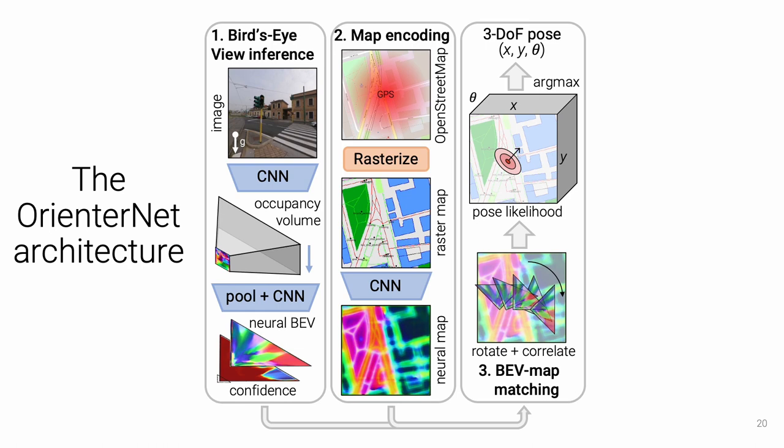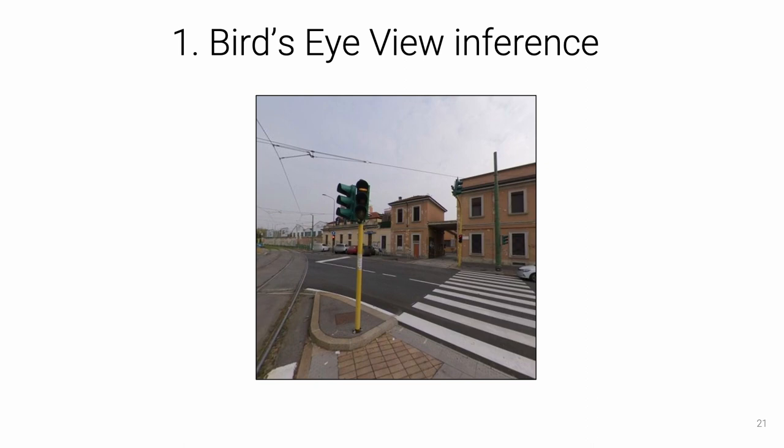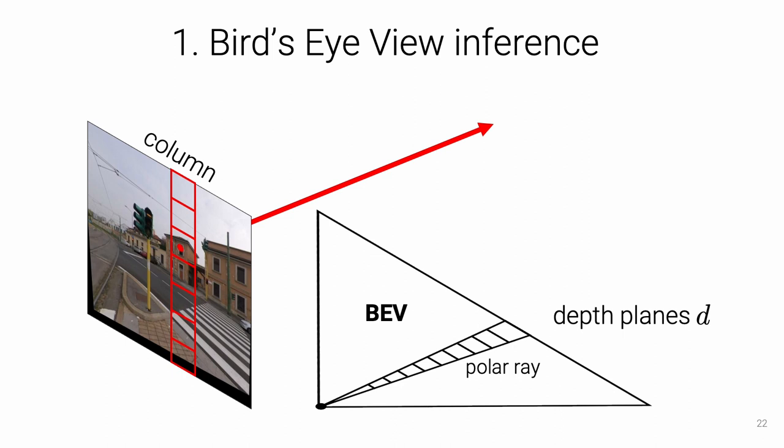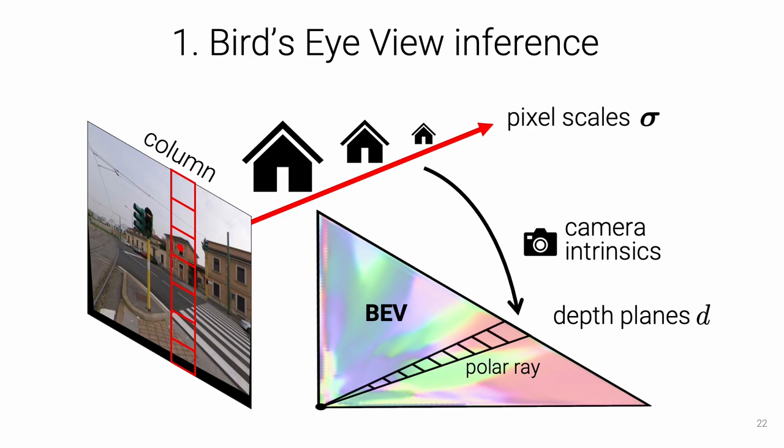OrientInternet is trained end-to-end by maximizing the likelihood of the ground truth pose. To infer the BEV, we first rectify the image with the known gravity. Each column of pixels then maps to a ray in the BEV, which we discretize in depth planes. To map an image feature to the correct plane, we need to estimate its depth. We instead predict its canonical scale, which we translate to a depth using the known camera intrinsics.